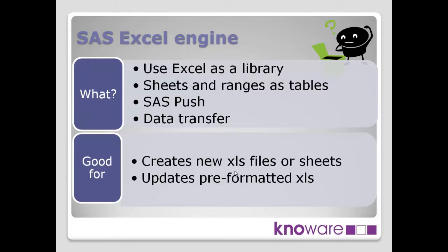The SAS Excel engine allows you to use Excel as if it was a library. As you're aware, a SAS library is typically a folder where your different SAS tables exist, or you may relate it to a database — a database schema, perhaps Oracle — where all the tables within relate as SAS tables. This is the same concept: you can point to an Excel spreadsheet and use it as a library, and each of the different worksheets can be different SAS tables or SAS members.